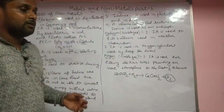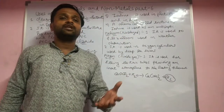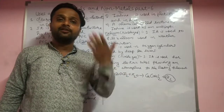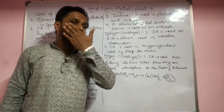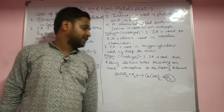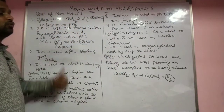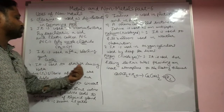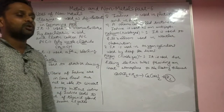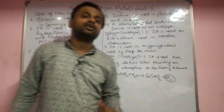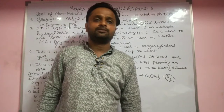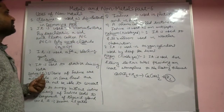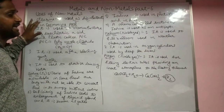Bleaching powder is also used as a bleaching agent in facials — to clean the face and kill bacteria. Chlorine is also used to sterilize drinking water, to kill bacteria in the drinking water, which is very useful for us.